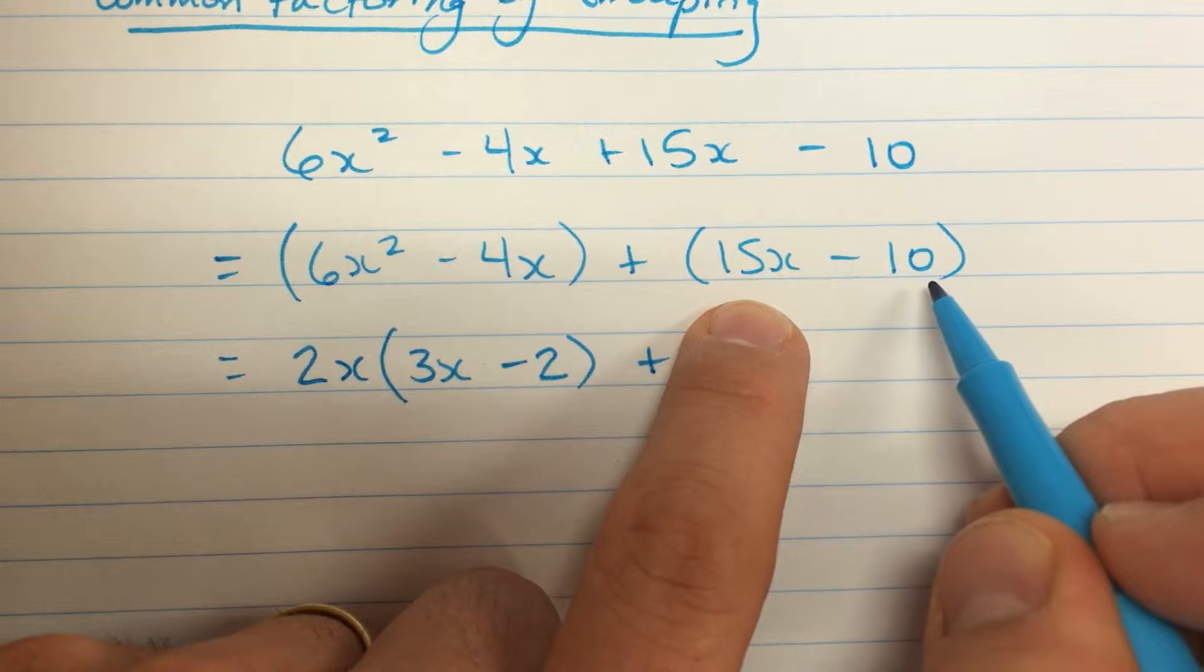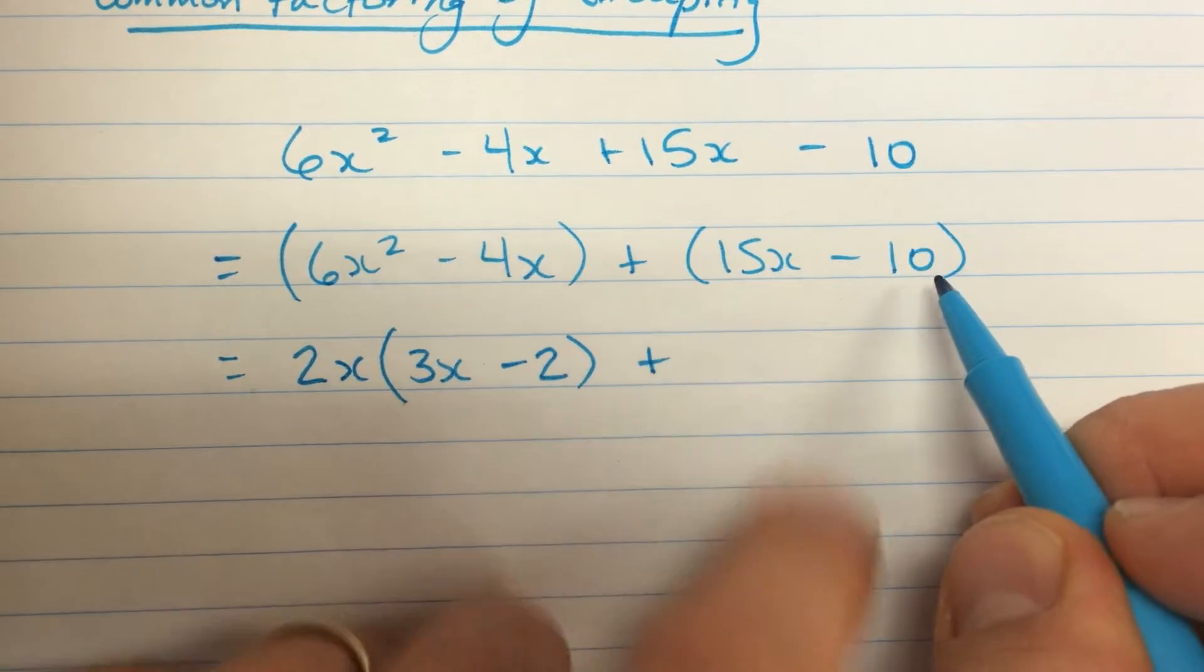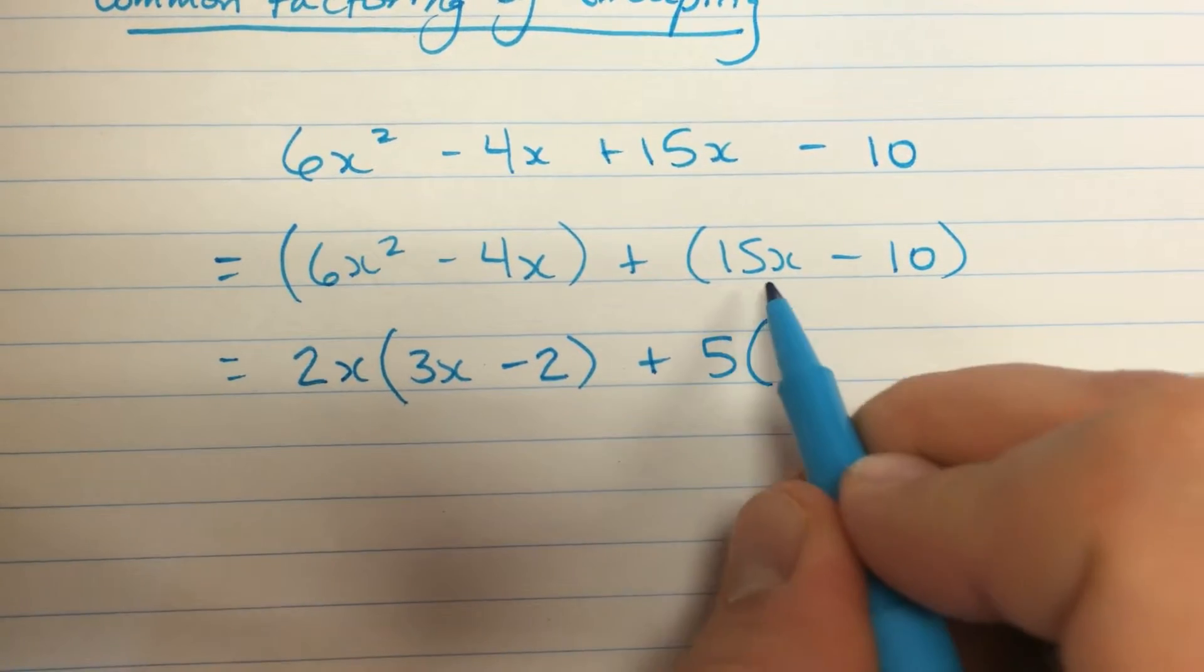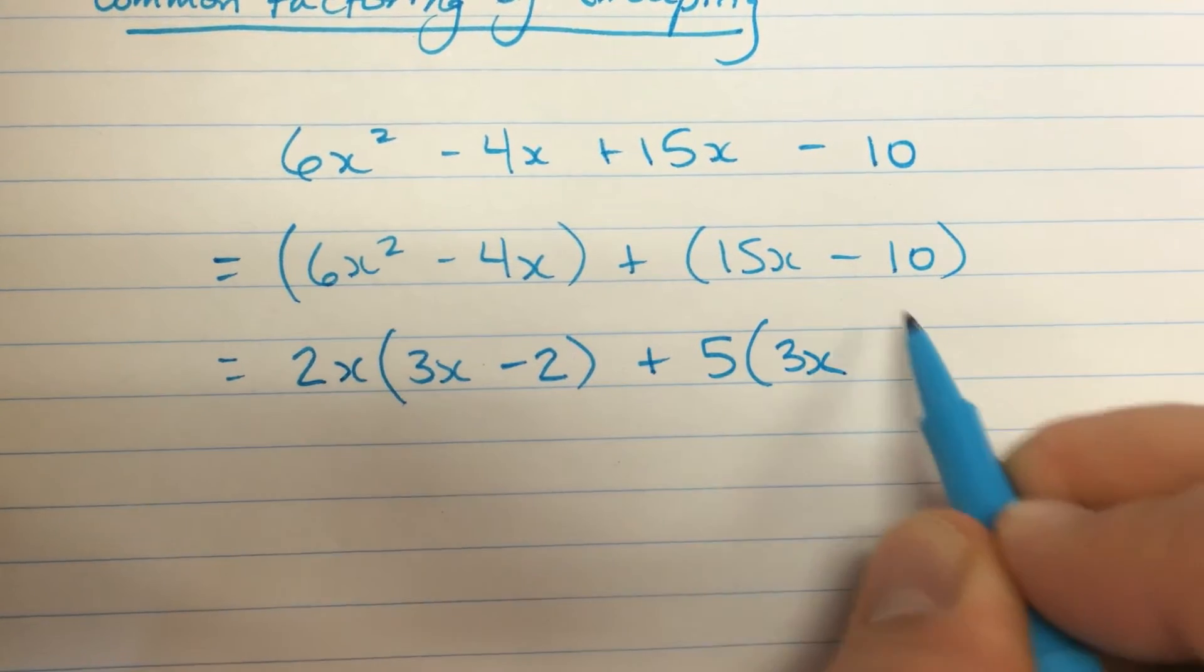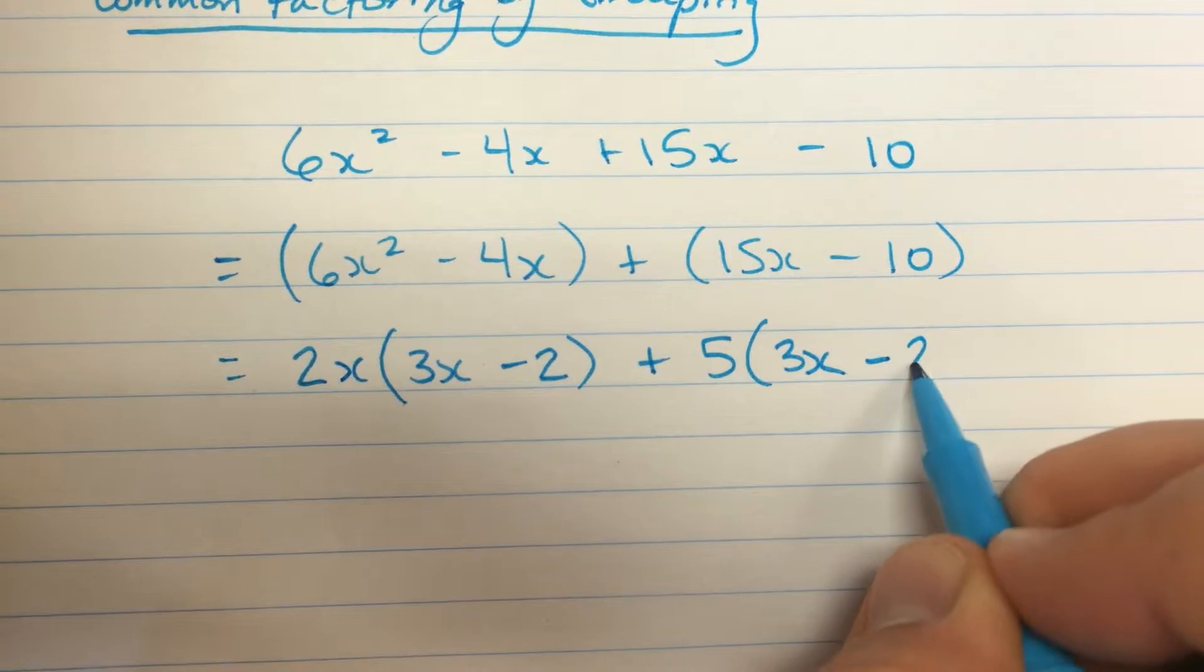Over here, 15x and 10, I can get a 5 out of there. And that's about it. So I'll take out a 5. 15 divided by 5 is 3. I still have the x. 10 divided by 5 is 2, and that's negative.